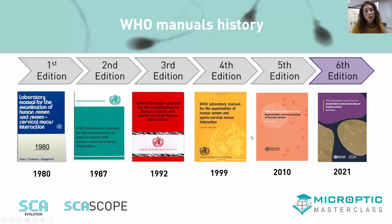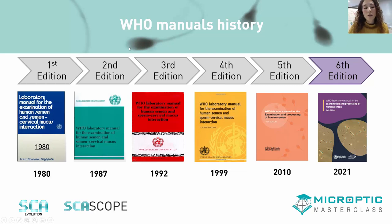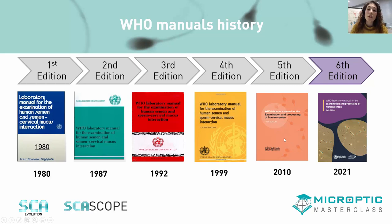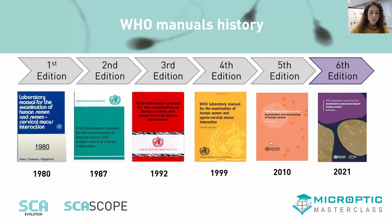Beginning with a little bit of history of the WHO manuals: since the 1980s, when the first edition of the manual was launched, a set of different editions have been published until we arrived at the latest edition, the sixth one, launched in July 2021. Through the years, different approaches have been added to sperm evaluation — reference values have changed and been updated, and with each new manual, the purpose is always to guide the technician through the process of semen analysis.